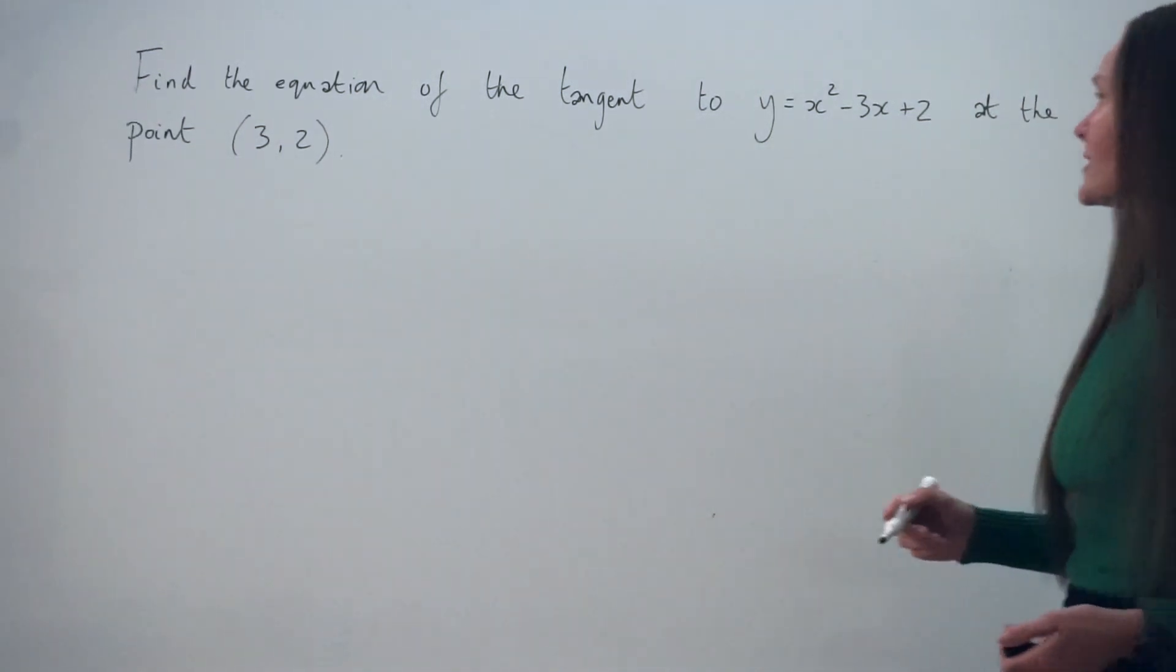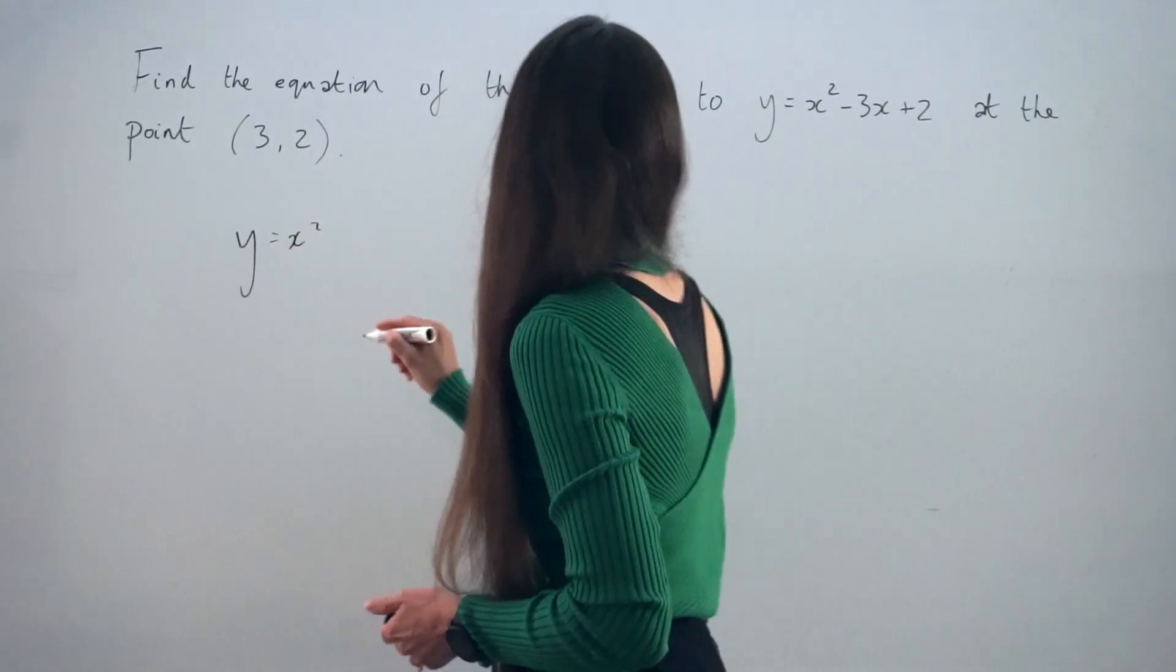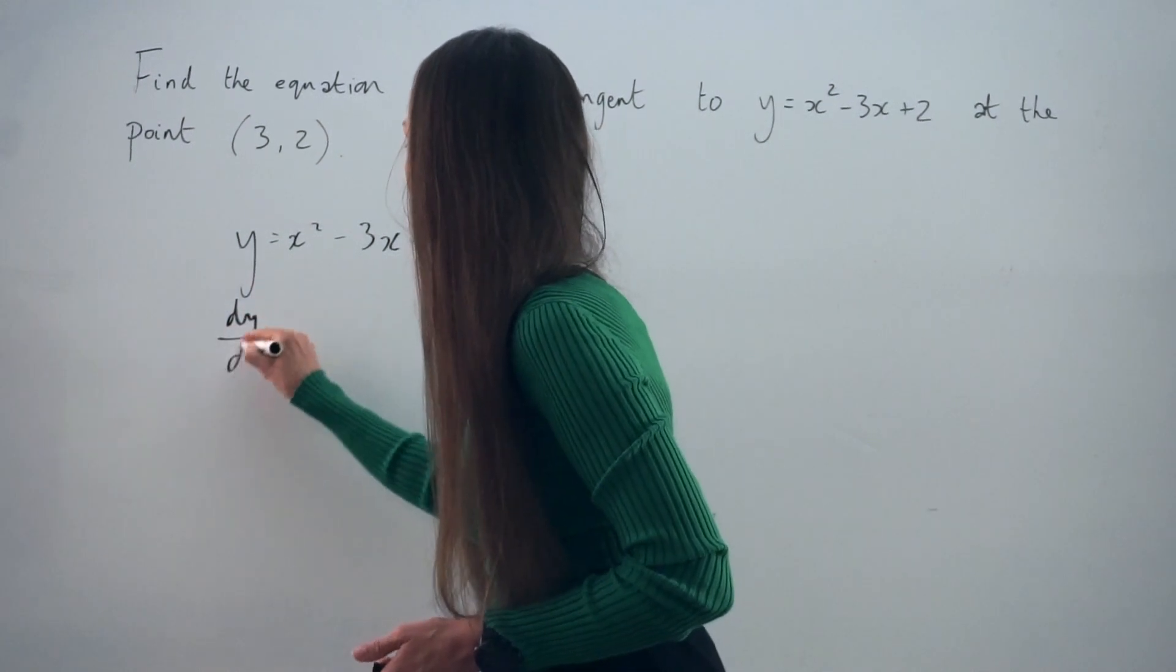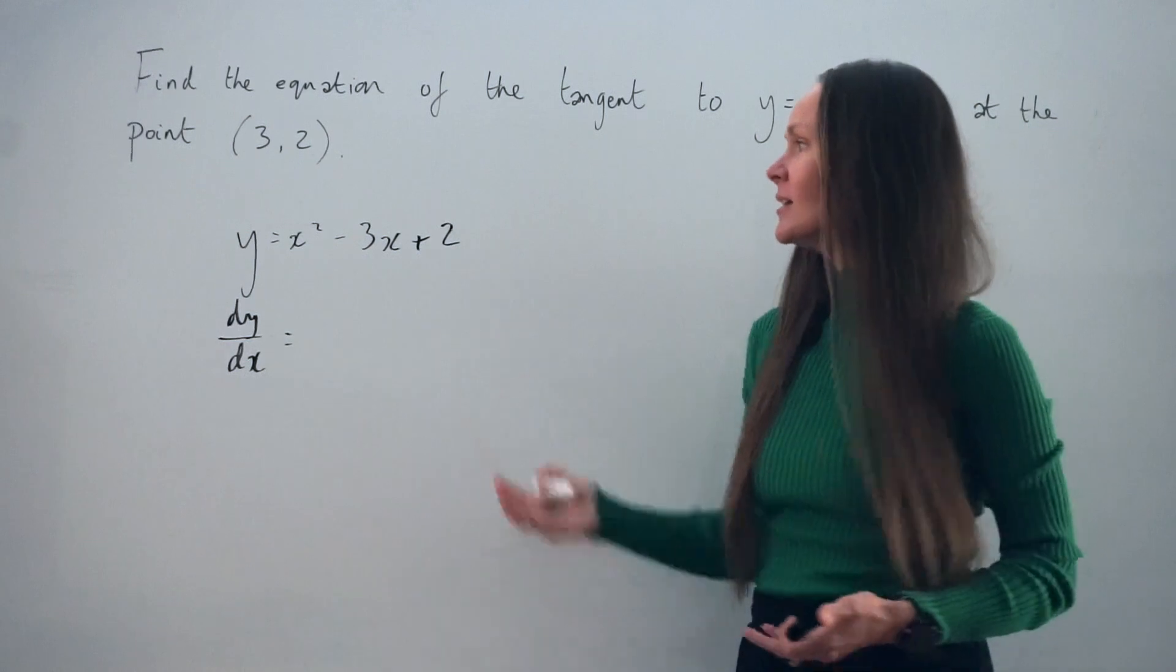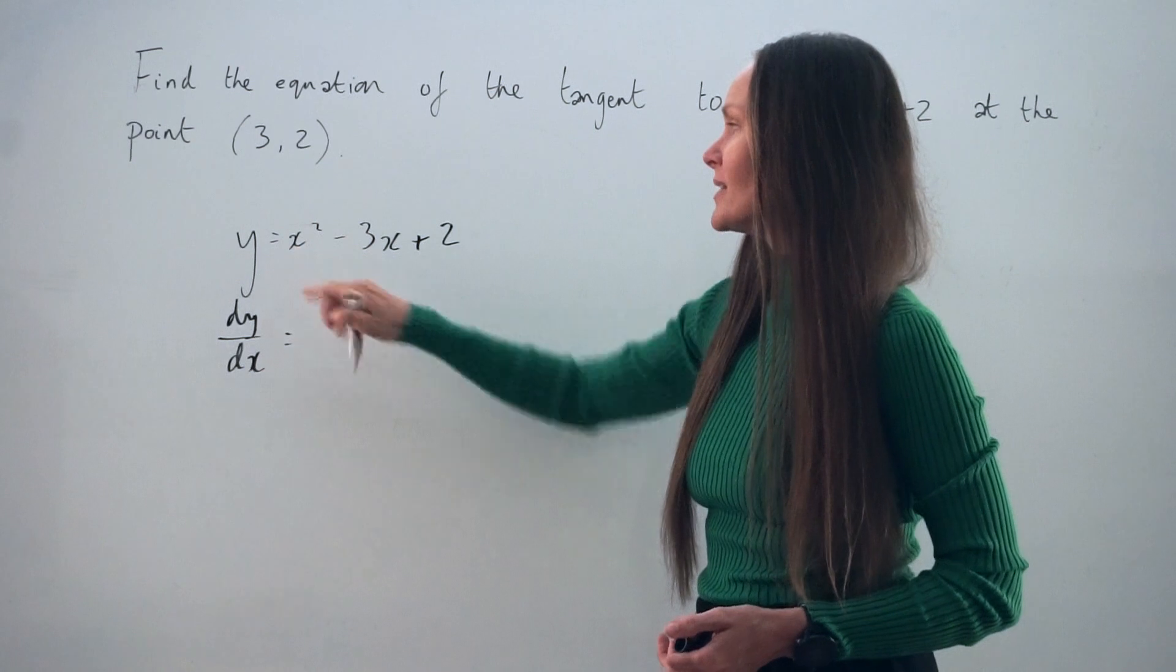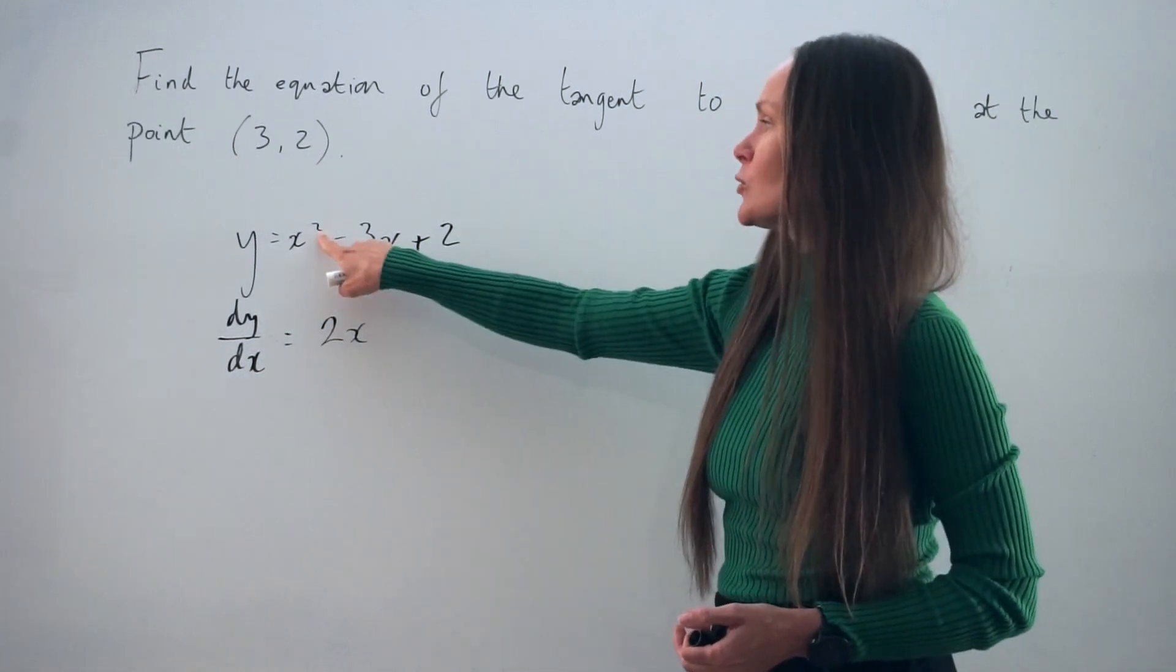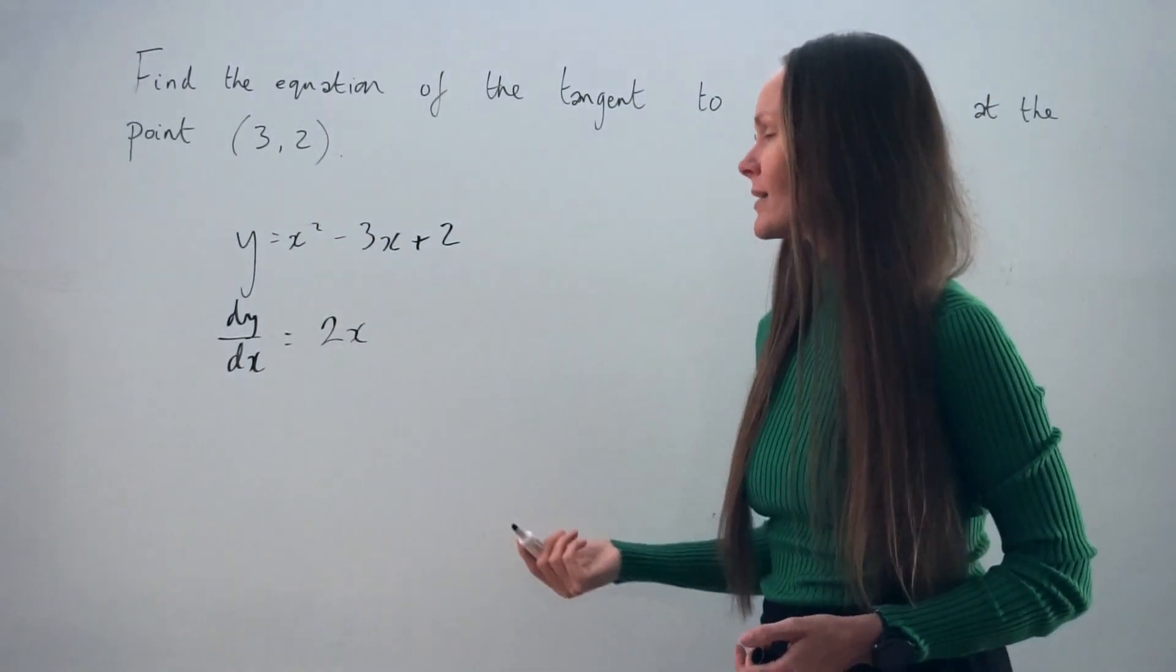So I'm going to start by writing out the equation again. So y equals x squared minus 3x plus 2. And I'm going to work out the derivative dy by dx of this equation. So remember, when we're differentiating an equation like this, you take the power here, 2, and you multiply it by this term. So we have 2x. And then remember, the power always decreases by 1. So 2 take away 1 is 1. So we have 2x to the power of 1, or just 2x.